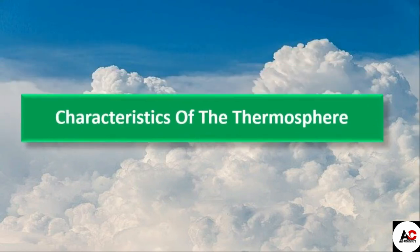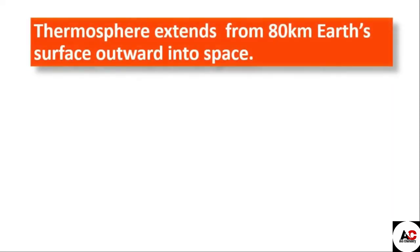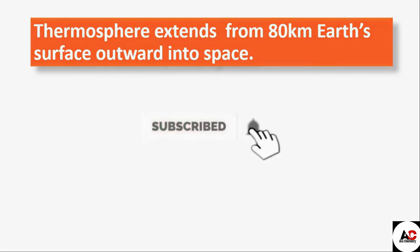What are the characteristics of the thermosphere? The thermosphere extends from 80 km above Earth's surface outward into space. After the mesosphere and before space, all the gases are part of the thermosphere.